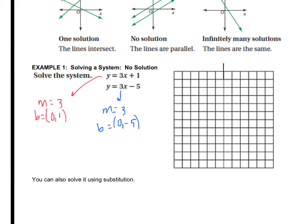So let's graph them. So 0, 1, slope is up 3, right 1. I can also go down 3, left 1. And I have to label.